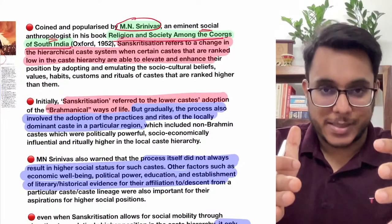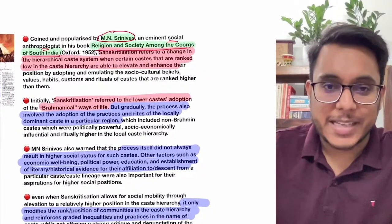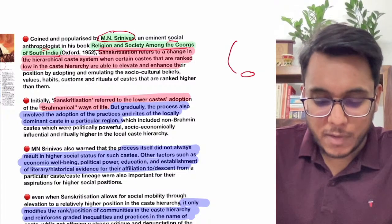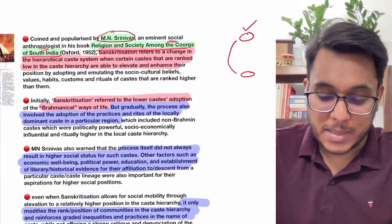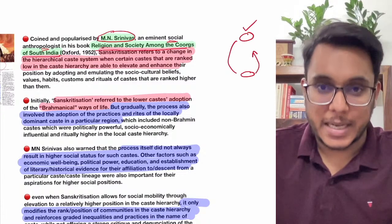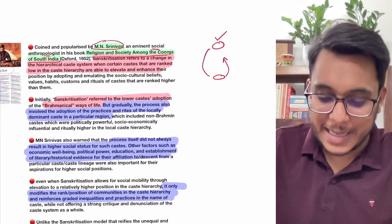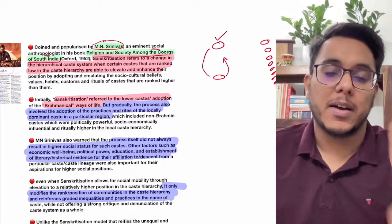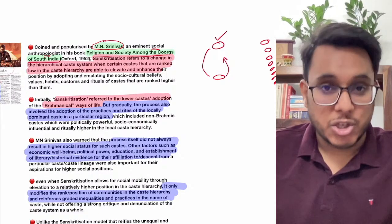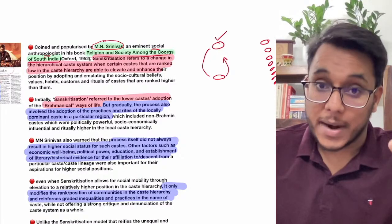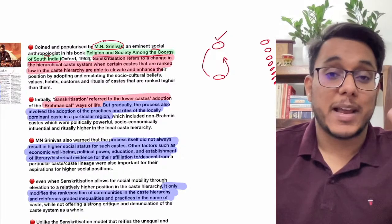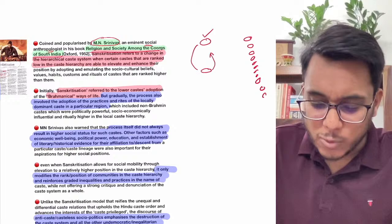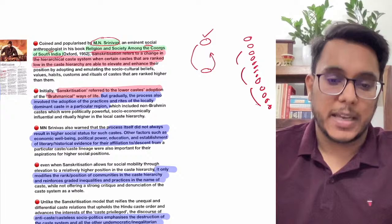What is Sanskritization? In simple words, it refers to a process where a person of a lower caste imitates certain practices of a higher caste, expecting to gain upward social mobility. In India, the four original varnas — Brahmins, Kshatriyas, Vaishyas, and Shudras — eventually converted into thousands of jatis, castes, and sub-castes arranged in a hierarchy with upper and lower parts.